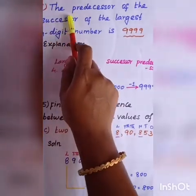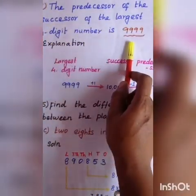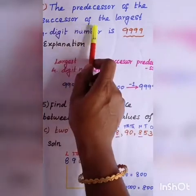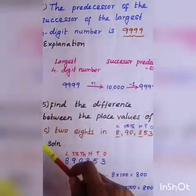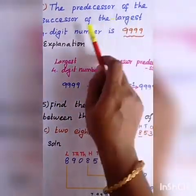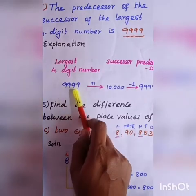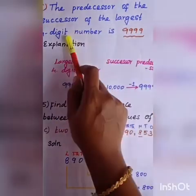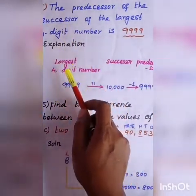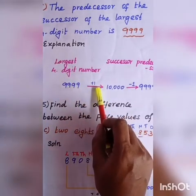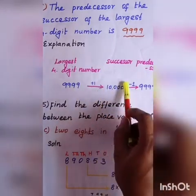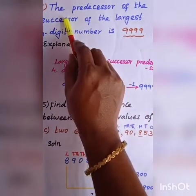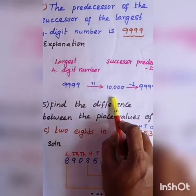Next problem: the predecessor of the successor of the largest 4-digit number is blank. The largest 4-digit number is 9,999. The successor means add 1, so the successor of 9,999 is 10,000.